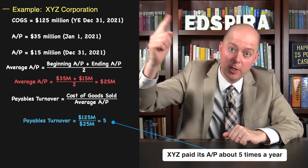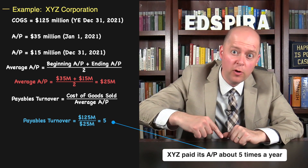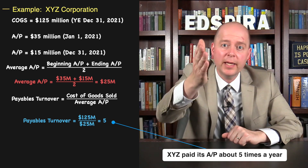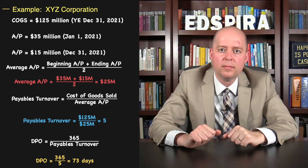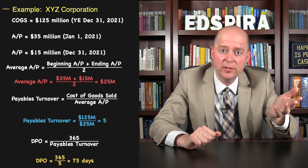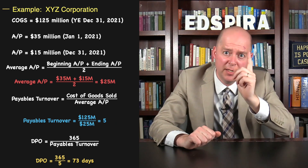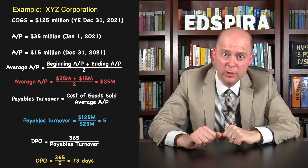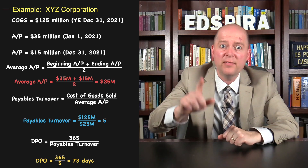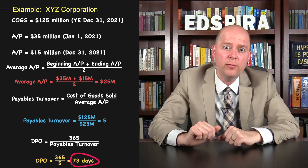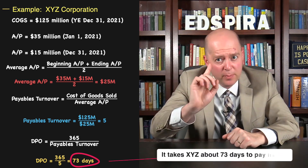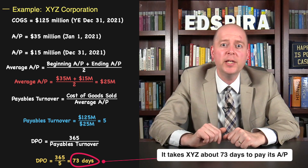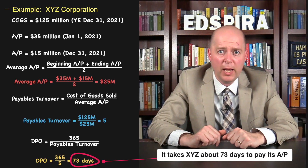Now that we know the payables turnover, we can calculate Days Payable Outstanding. We take 365 and divide it by our payables turnover of five to get 73. This means it takes the company about 73 days to pay its suppliers.